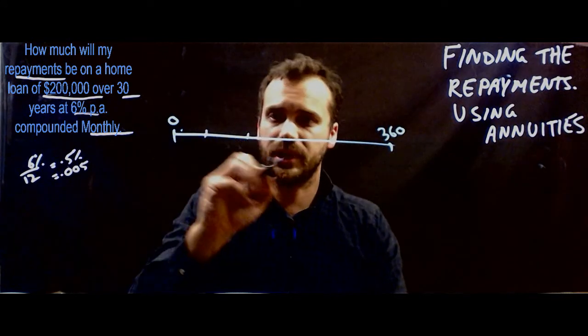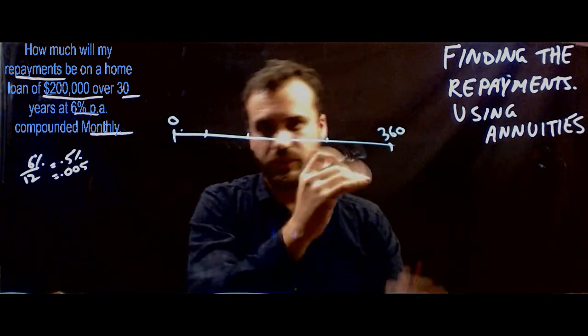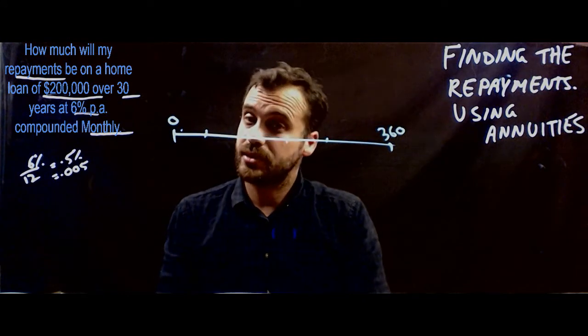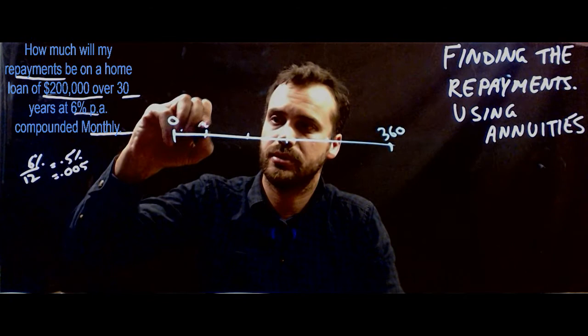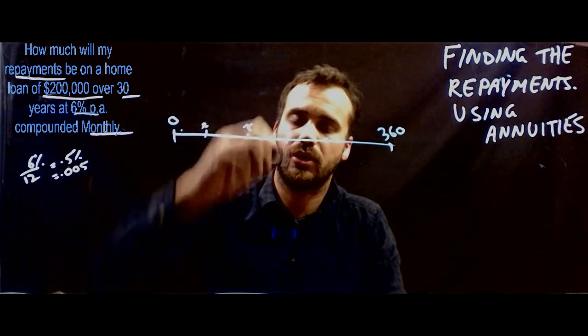And there's going to be a bunch of payments, 360 of them. Now the payments are the things we don't know the value of. So we're going to call them X. X, X, a whole bunch of X's.